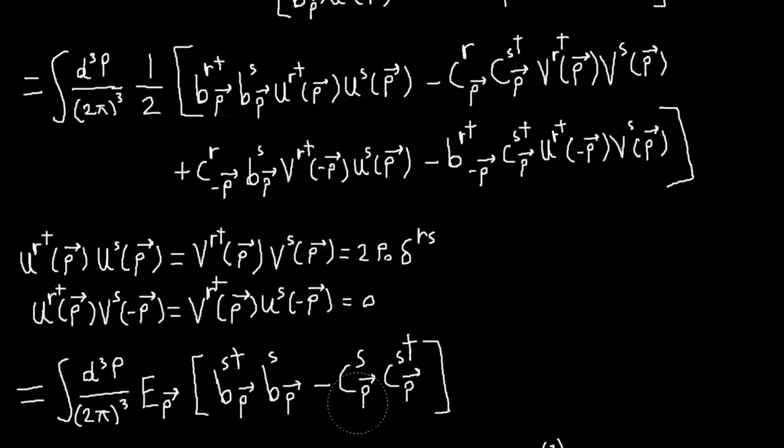And so it just reduces to this, which is similar to what you get to when you do the complex Klein-Gordon theory. Only there we had a plus sign instead of a minus.